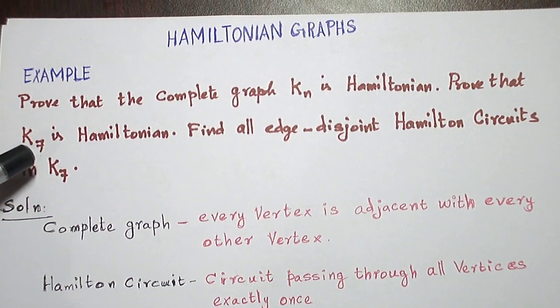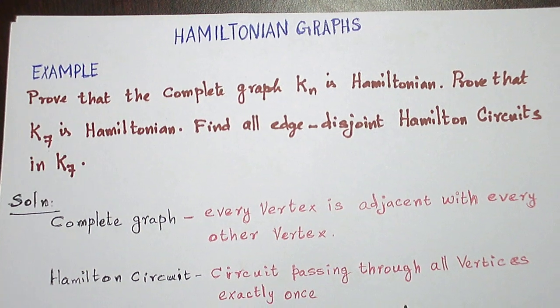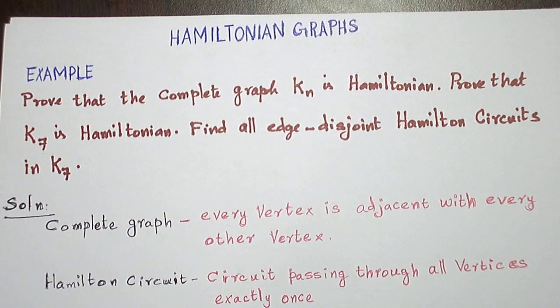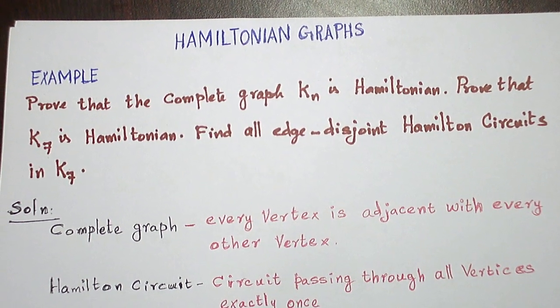And similarly, particularly when N is equal to 7, K7 is a Hamiltonian graph. Find all edge-disjoint Hamilton circuits in K7. This is asked.